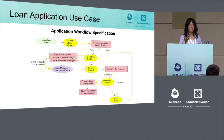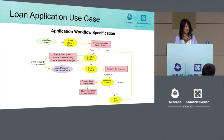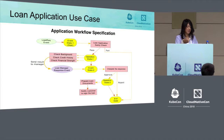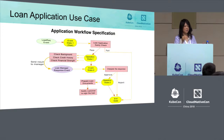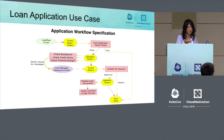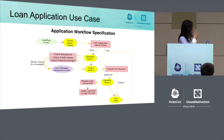This is a loan application use case, and this is a workflow specification for that loan application. The workflow starts with an event state. When the loan request event occurs, the workflow is triggered to run, and a function is invoked to do a loan application sanity check — verifying the username and other details. If the check passes, it transitions to operation state one, where three functions are triggered to run in parallel.